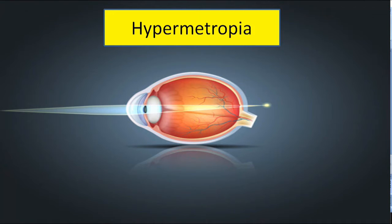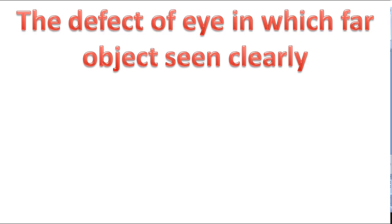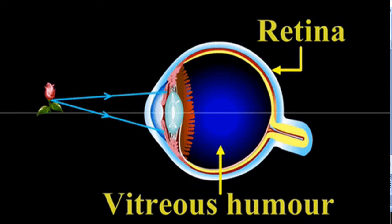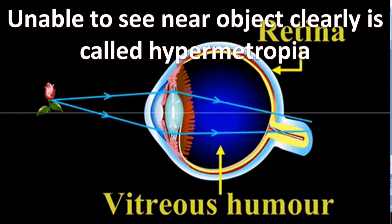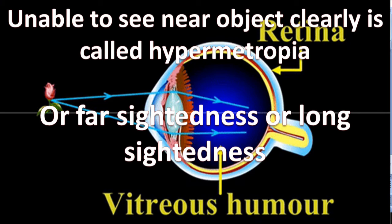Hypermetropia, also known as far sightedness or long sightedness, is the defect of the eye in which far objects are seen clearly. The parallel light coming from a far object converges by the eye lens on the retina, so the picture formed is clearly seen. However, the person is unable to see near objects clearly. In this condition, light coming from a near object converges after the retina, and its image is not seen clearly.